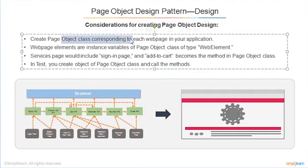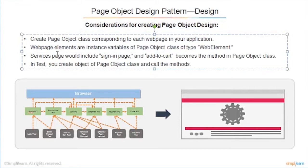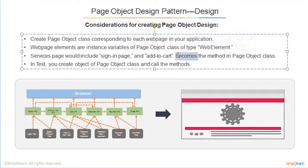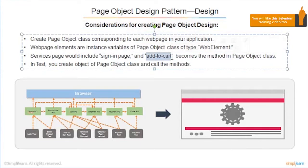That's what it states: Considerations - whenever you create a page object design, always consider these few things. Always create a class for every web page. Web page elements are instance variables of the page object class of type WebElement. So whatever elements you write in that are always instance variables. Service pages would include SignInPage, AddToCart, which becomes a method in the page object class. There will be service pages where you may see AddToCartPage functionality or methods. And in the test, you create an object of the page object class and call the methods.